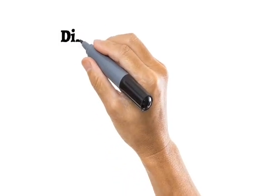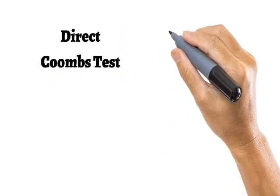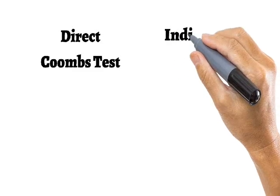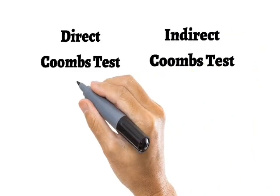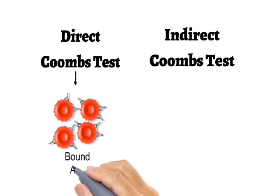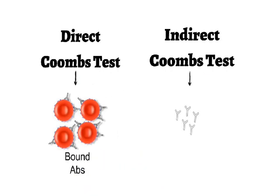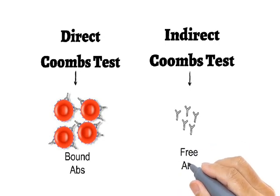There are two types of Coombs test. The first is the direct Coombs test, and the second is the indirect Coombs test. In the direct Coombs test, bound antibodies are detected, while in the indirect Coombs test, free antibodies are detected.